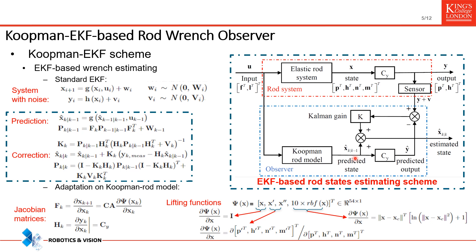In the numerical experiments, we chose state itself, state derivatives, and simplified radial basis functions as the lifting functions. The exact form of their derivatives with respect to state X can be derived analytically. This allows efficient Jacobian computation and removes the need for numerical approximation.